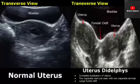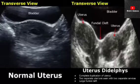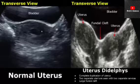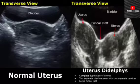These are transabdominal images of the uterus. On the left side is a transverse image of a normal uterus. We can see the normal myometrium and normal endometrial canal, with the bladder anterior to the uterus. On the right is uterus didelphys, in which there is a complete duplication of the uterus.